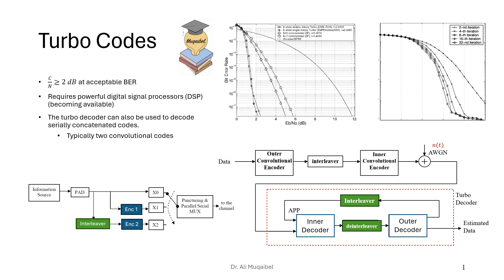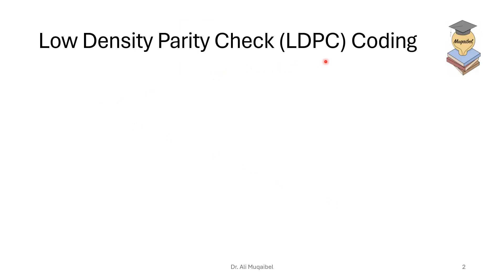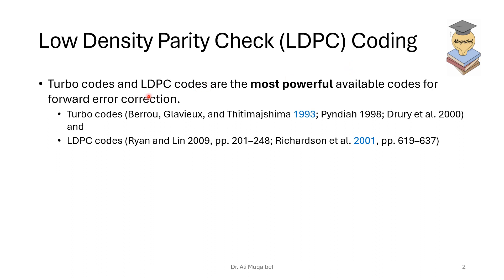Next we introduce another code: low density parity check (LDPC) coding. We're just comparing with turbo codes here. Turbo codes and LDPC codes are the most powerful available codes for forward error correction — though this statement changes with time as newer codes emerge. Turbo codes were introduced in 1993, and LDPC codes followed around 2001 — these are rough numbers — with several key references available for further reading.